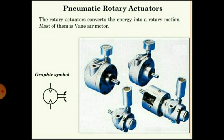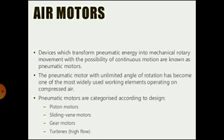Rotary actuators are the second category of actuator — they convert energy into rotary motion, and the most common type is the vane air motor. Devices which transform pneumatic energy into mechanical rotary movement with the possibility of continuous motion are known as pneumatic motors. The pneumatic motor with unlimited angle of rotation has become one of the most widely used working elements operating on compressed air.